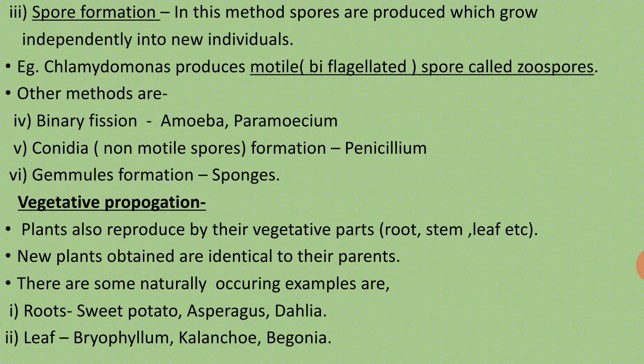Gemmule formation occurs in sponges. The spores have a hard cover which protects them under unfavorable conditions. When favorable conditions return, the cover opens and the spores germinate. This is all about asexual methods of reproduction — that is fragmentation, budding, spore formation, binary fission, conidia formation, and gemmule formation.